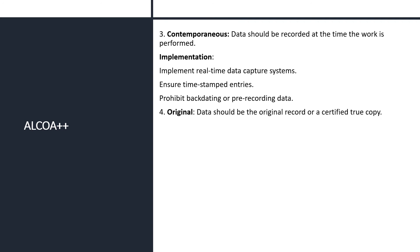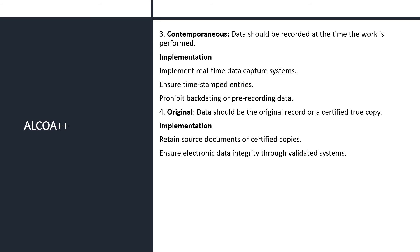The fourth letter, O, stands for Original. Original means data should be the original record or a certified true copy. There should not be any duplicate copy without having the authenticity of the data. For implementation: retain source documents or certified copies to maintain the original, first-time generated or source data. Ensure electronic data integrity through validated systems. Avoid transcription unless necessary, and validate any copies.